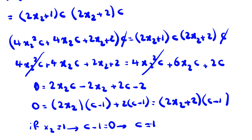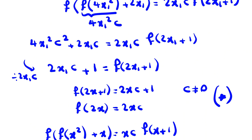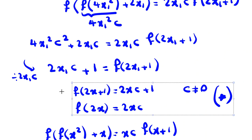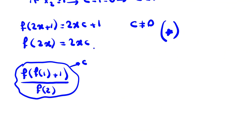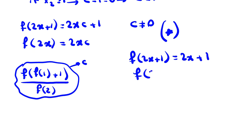With c = 1, our formulas become f(2x+1) = 2x+1 and f(2x) = 2x. So f(x) = x for all positive integers x. We can also verify: f(1) = 1, f(2) = 2, which gives c = (2·f(f(1)+1))/f(2) = (2·f(2))/f(2) = 2/2·... confirming c = 1.